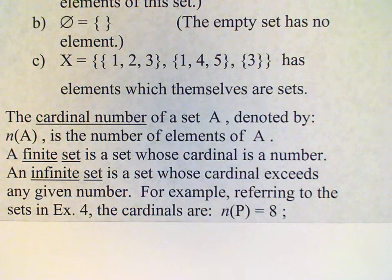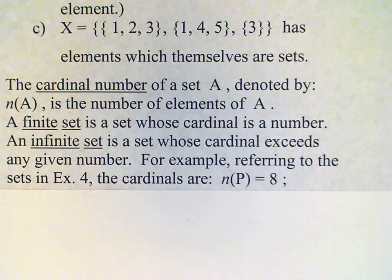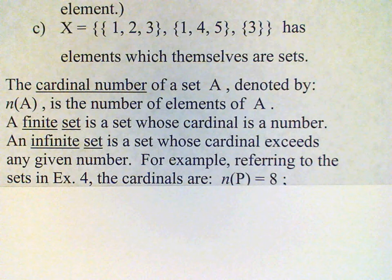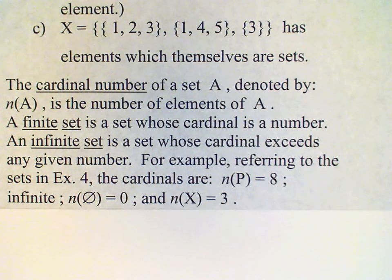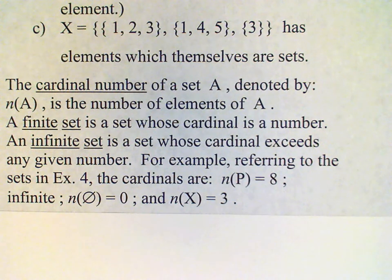For the sets given in the previous example, we have for the cardinal numbers, P has cardinal number 8. The number of elements in the set of all counting numbers is infinite, so we cannot give a number for that. The number of elements in the empty set is 0. And the number of elements in our set X is 3, because there are three sets contained in that set.